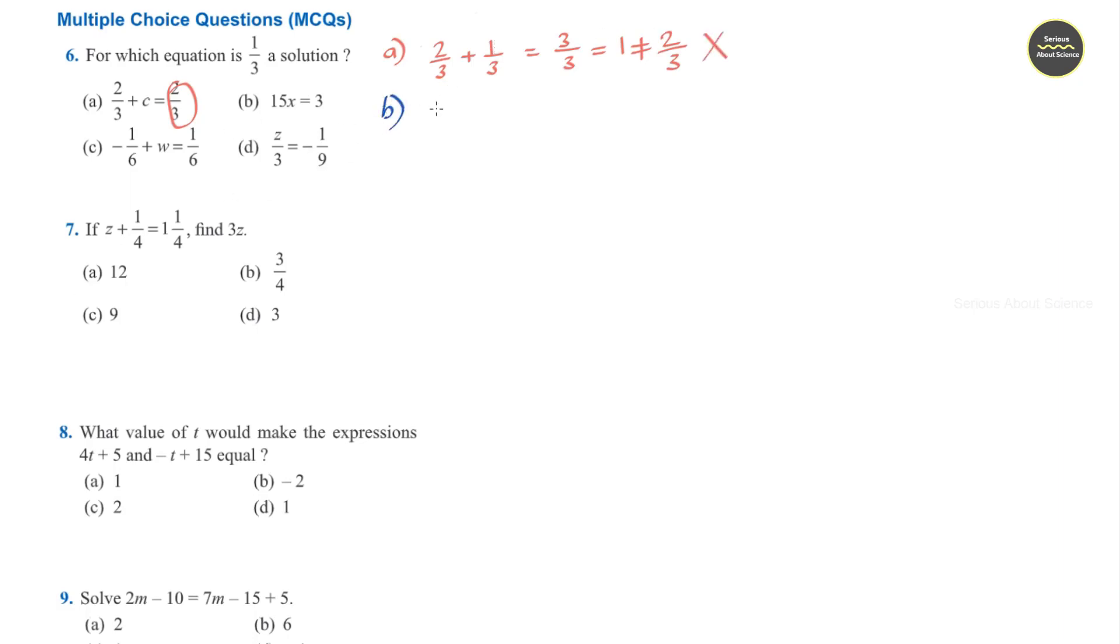Option b, 15h. I am substituting as 1/3 is equal to 15. And 3 I can cancel, it will be 5. But here the answer is given as 3, so option b is also not the answer.